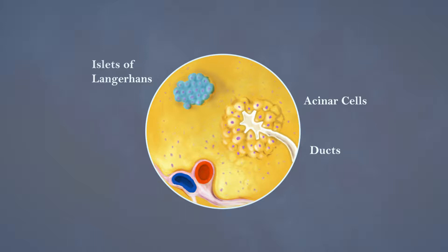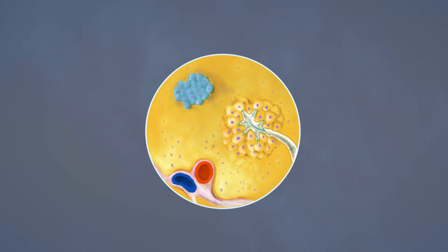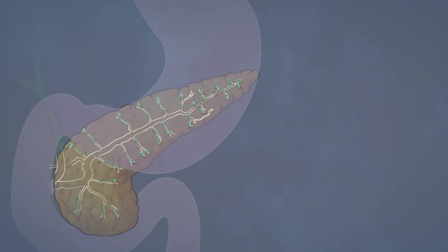Acinar cells produce and secrete digestive enzymes. These enzymes flow through progressively larger ducts and exit the pancreas into the duodenum.